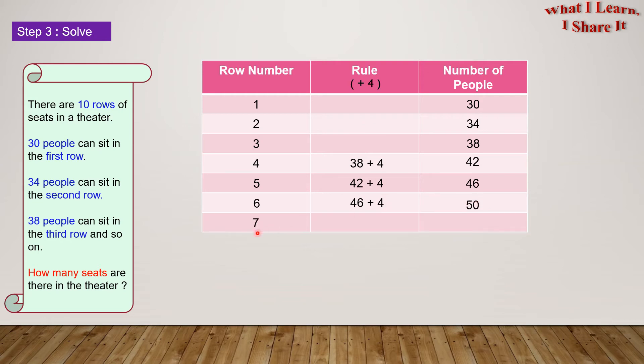For row number 7, it will be 50 plus 4, which is 54. For row number 8, it will be 54 plus 4 equals 58. For row number 9, it will be 58 plus 4, which is 62.